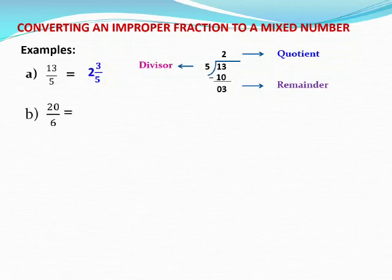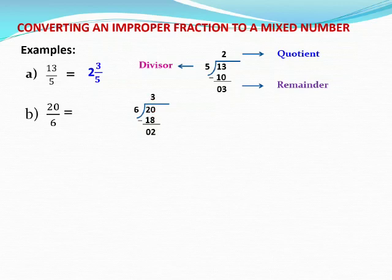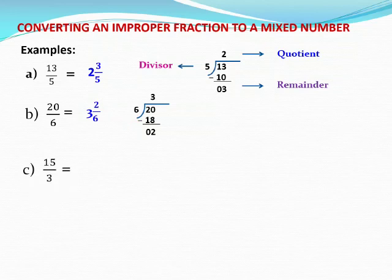Let us see the next example: 20 by 6. First step, divide 20 by 6. The quotient is 3 and the remainder is 2. To write in the form of a mixed number, we write the quotient as the whole number part. Then remainder is the numerator and divisor is the denominator. So 3 is the whole number part, 2 is the numerator, and denominator is 6, giving 3 and 2 by 6. One more example: 15 by 3. Quotient is 5 and remainder is 0. When the remainder is 0, we write the answer as a whole number — 15 by 3 equals only 5.